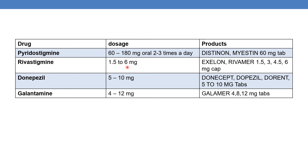The next is rivastigmine. It is available in the dosage form of 1.5 to 6 mg. Examples of marketed products are Exelon and Rivamar, available in 1.5, 3, 4.5, and 6 mg capsules.